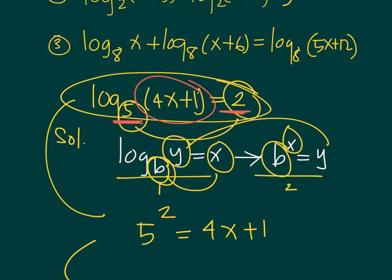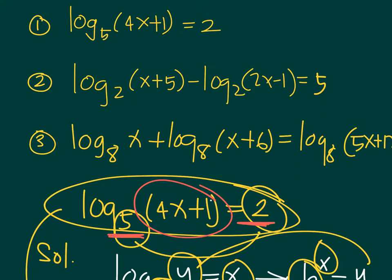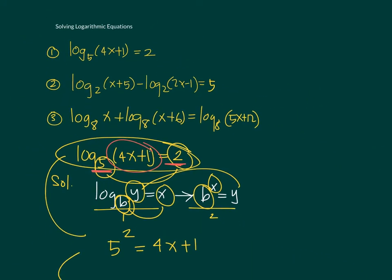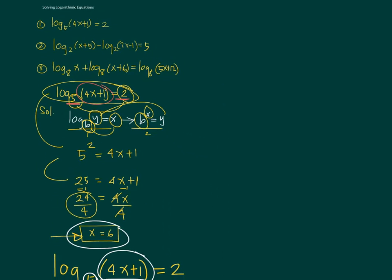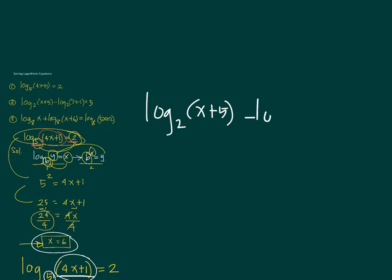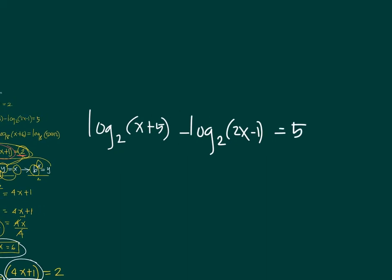Now let's look at the second example: log base 2 of (x+5) minus log base 2 of (2x-1) equals 5. How do we solve equations with more than one logarithm, especially with a difference of two logarithms? The main idea is to reduce or simplify the logarithmic equation.